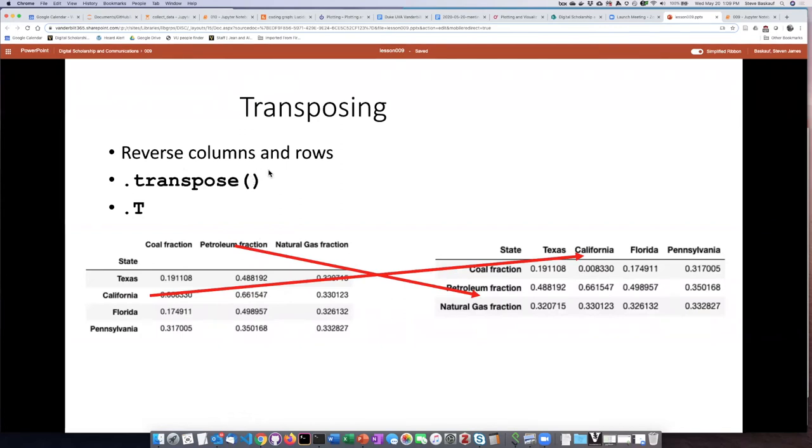This is actually a very commonly used method, so there's a shortcut which is capital T that can be used instead of writing out the entire transpose keyword.